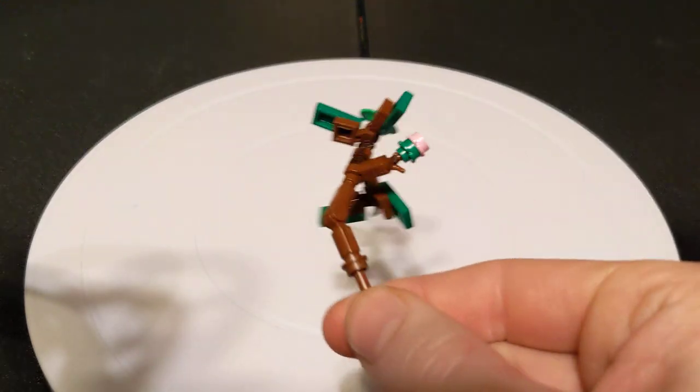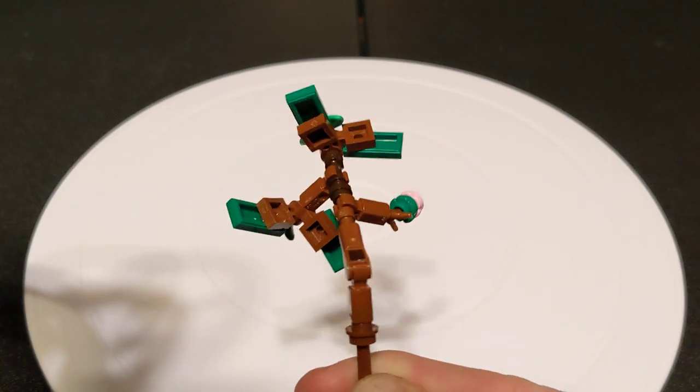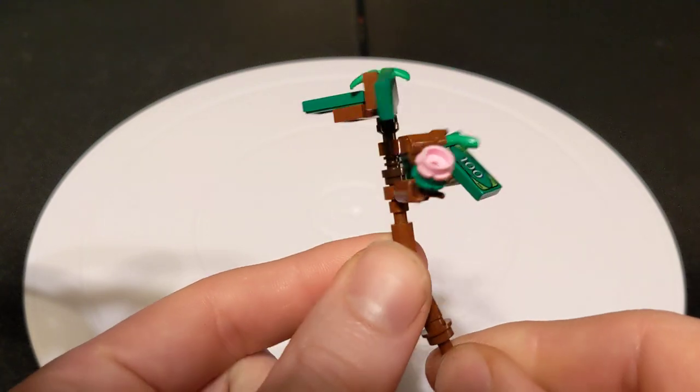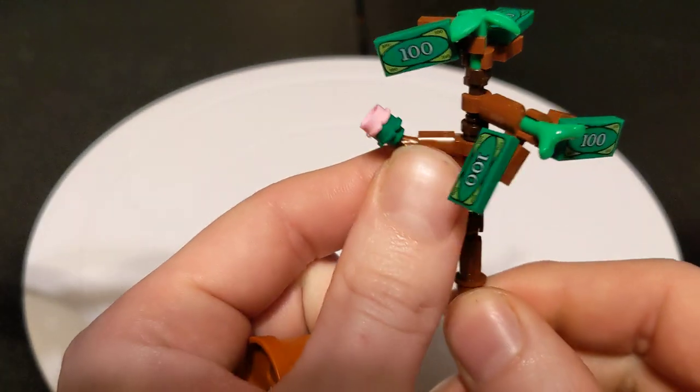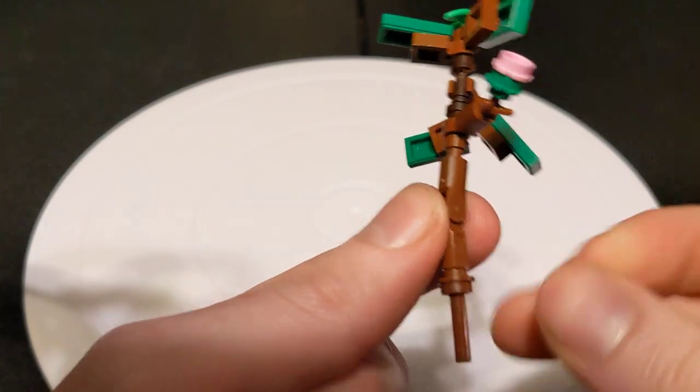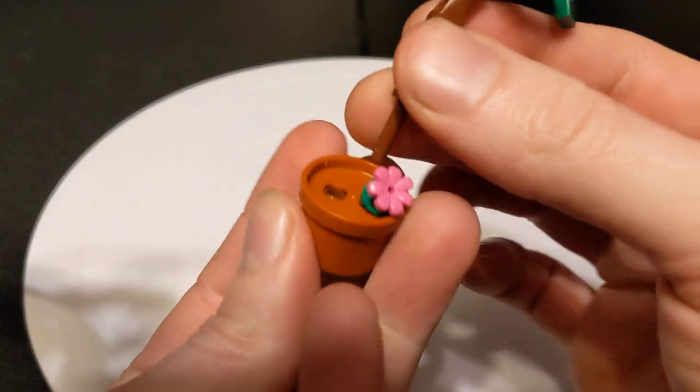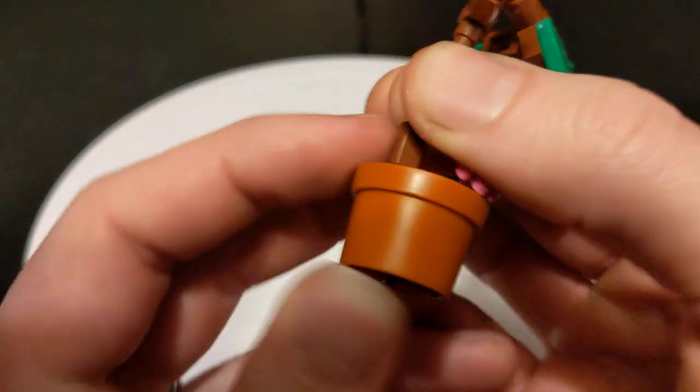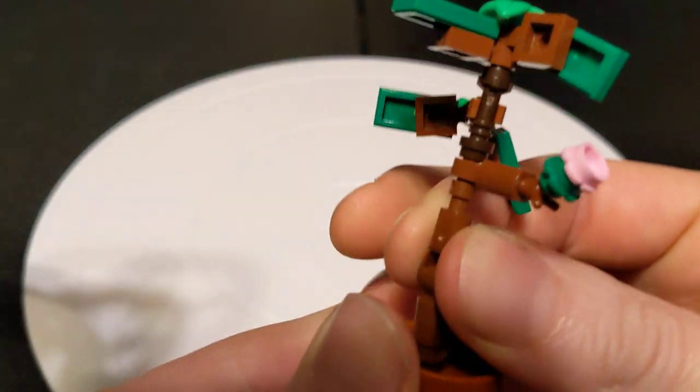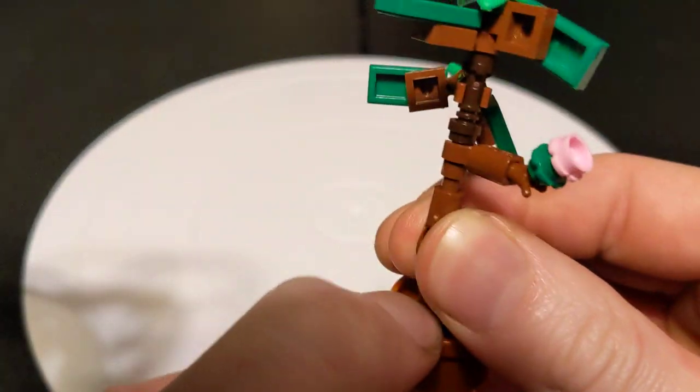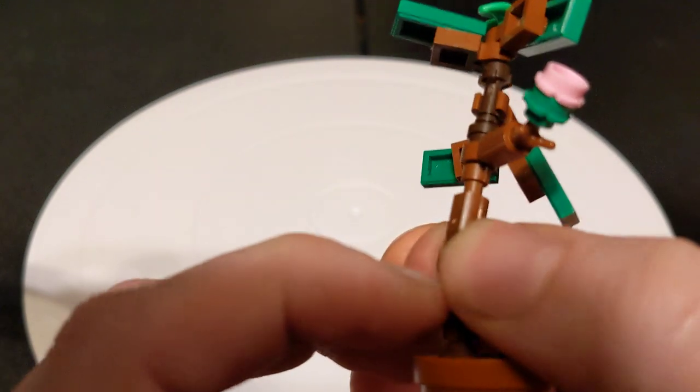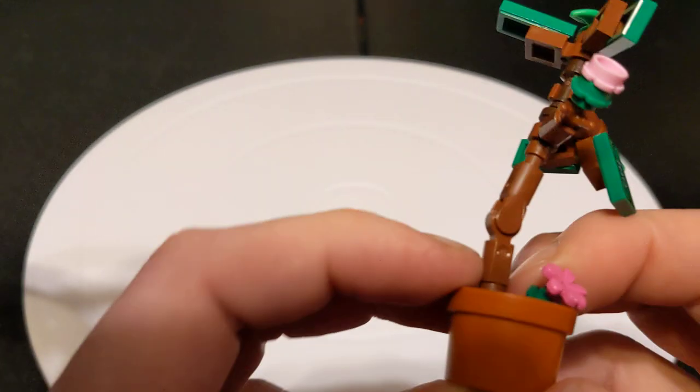And then the rest of it is rods and these hinge pieces. Now most of this is in the reddish brown except for the lightsaber hilt which is dark brown because they don't have it in reddish brown. Which is unfortunate but you do what you gotta do.